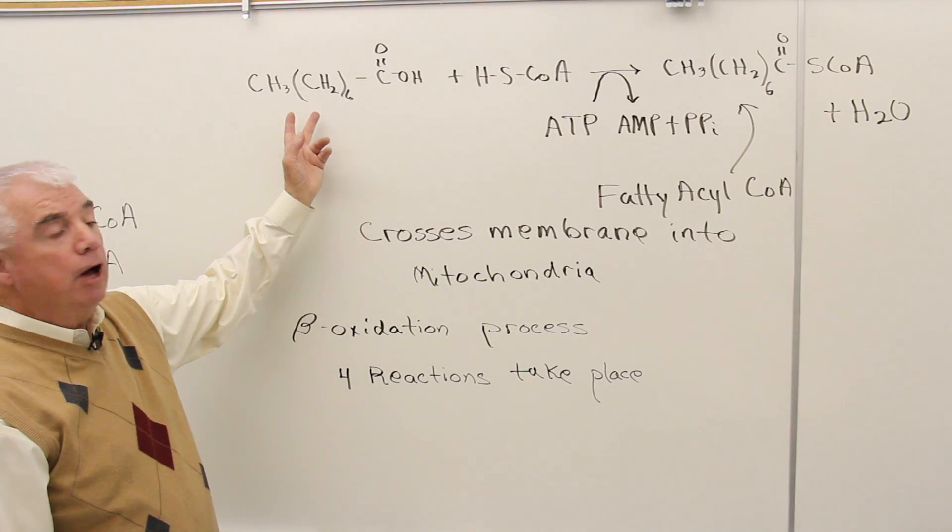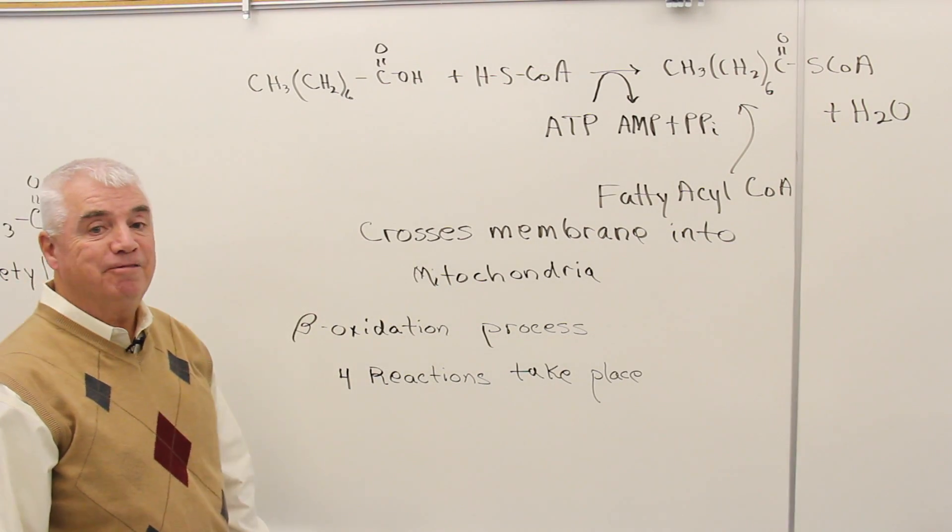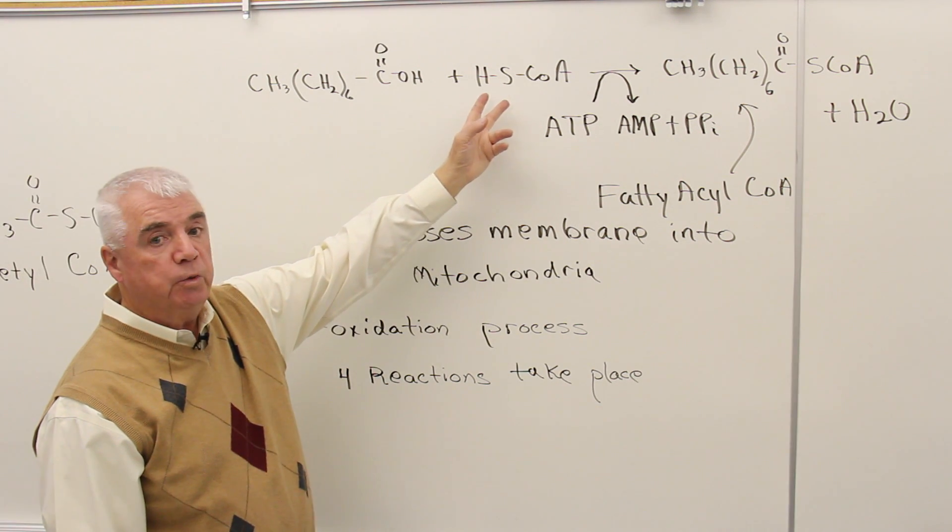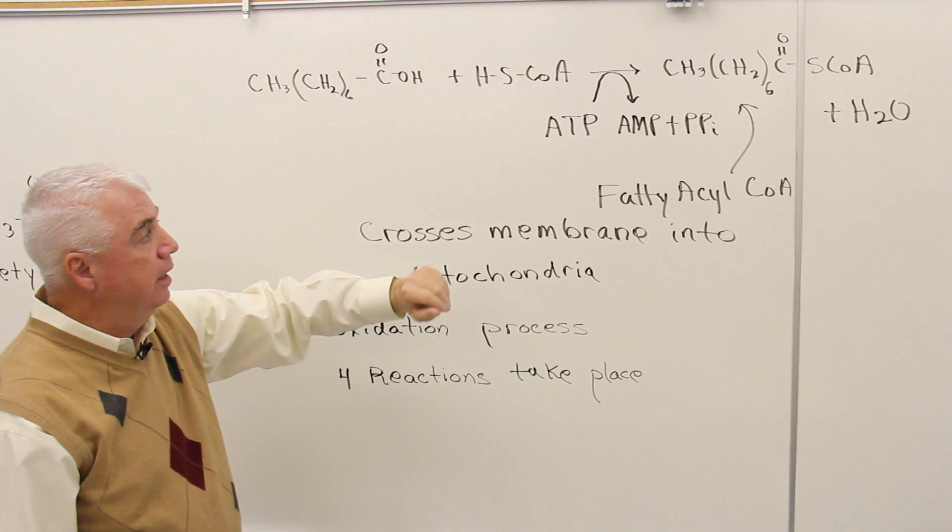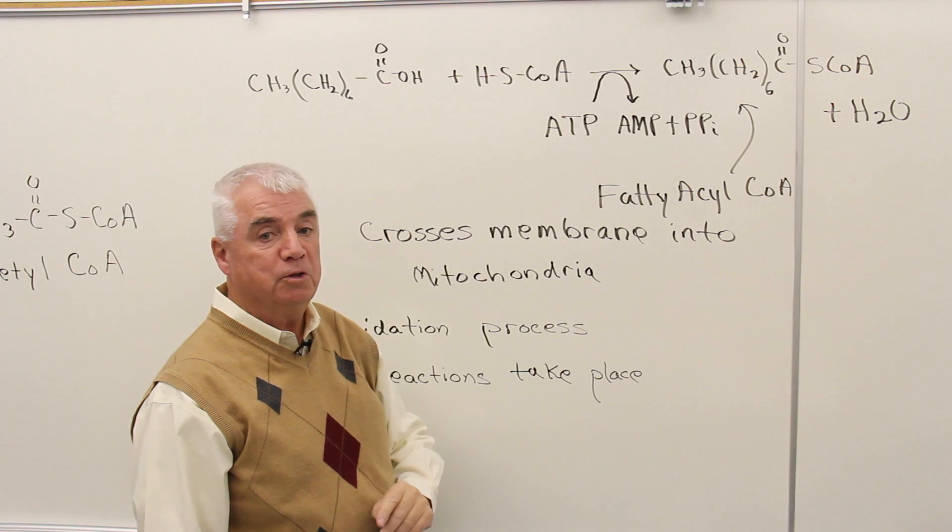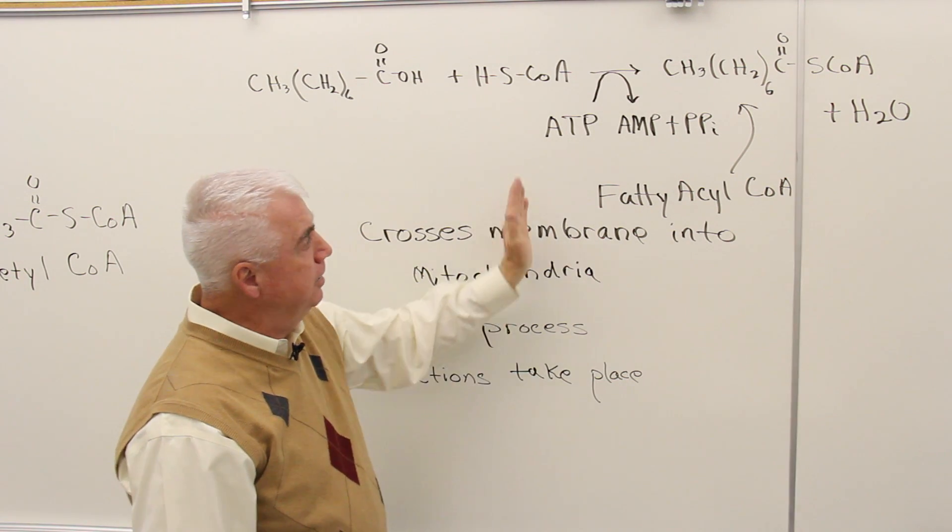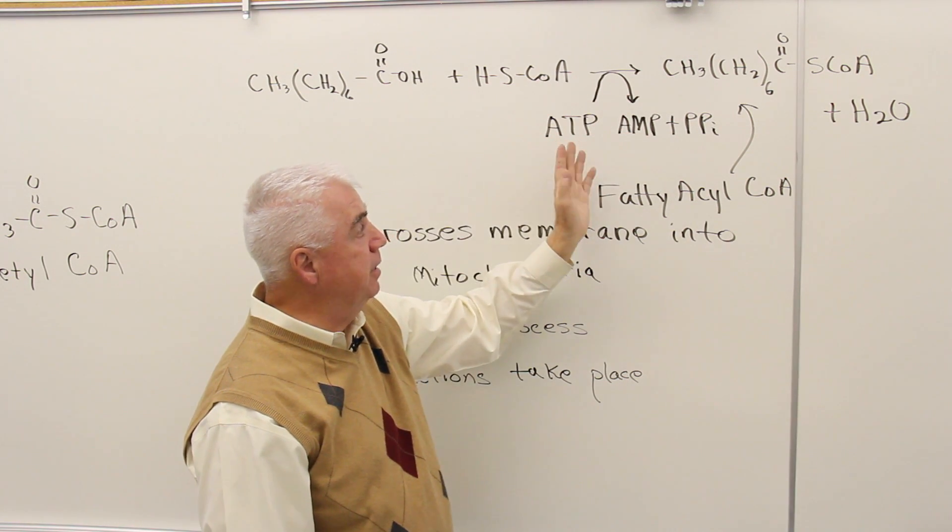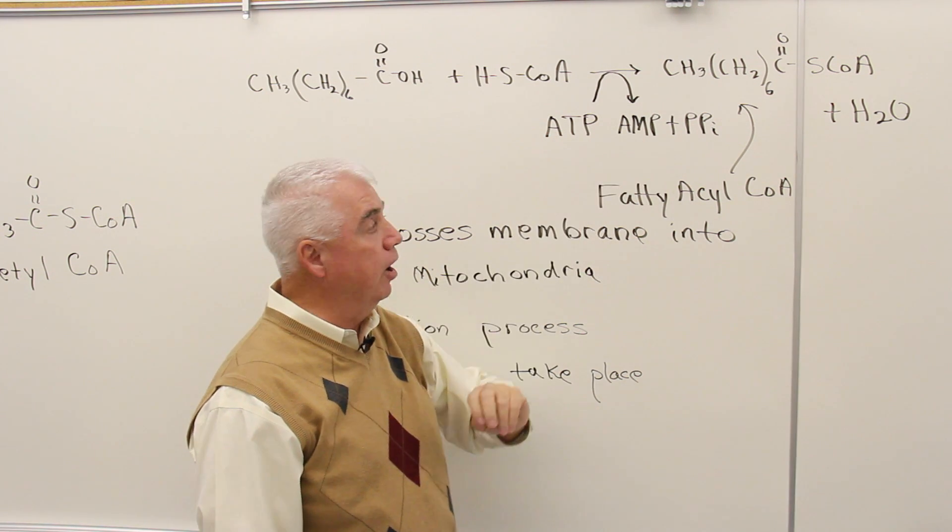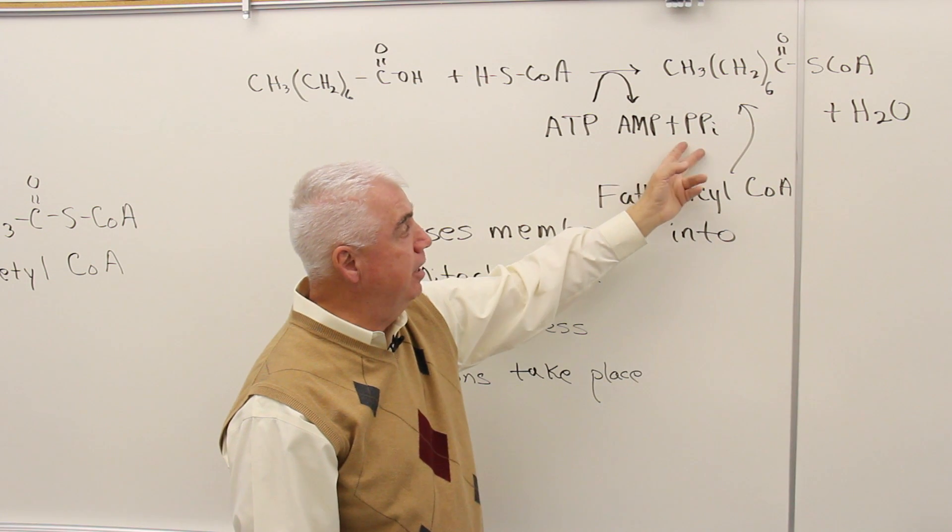Here, I've written out the structure of the C8 fatty acid. I've put in the hydrogens, reacts with coenzyme A, and it's an energy requiring process. The energy comes from molecules of ATP. In this process, ATP has three phosphate groups. Two of those are cleaved off to give AMP and pyrophosphate.